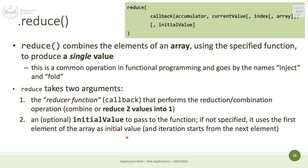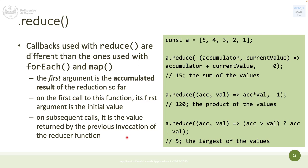The optional initial value starts the reduction; if not specified, the first element of the array is used and iteration starts from the second element. Use cases for reduce include summing values of an array, computing the product of all elements, getting the largest value, and computing averages. It's very versatile for reducing many numbers into one according to some criteria — addition, multiplication, subtraction, averaging.